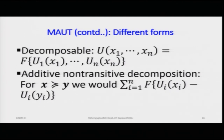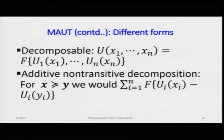For additive non-transitive decomposition, if x dominates y — where x and y are bundles of decisions (vectors) — then for any combination of u_i for x and u_j for x, the functional form always dominates and is greater than zero.